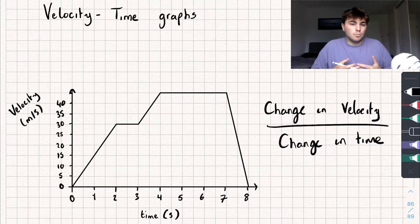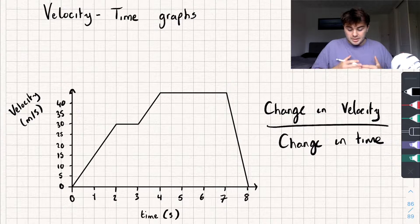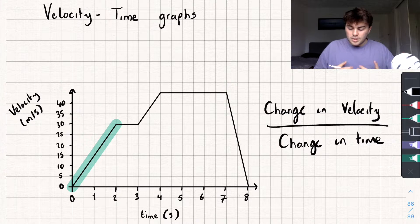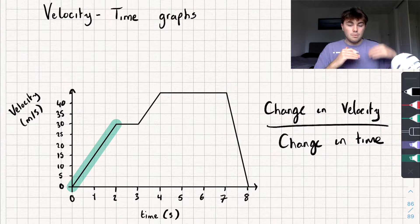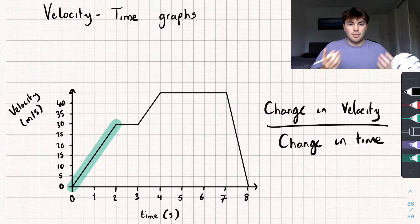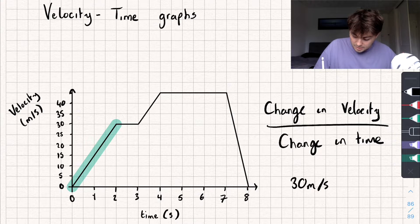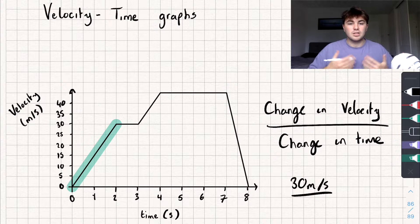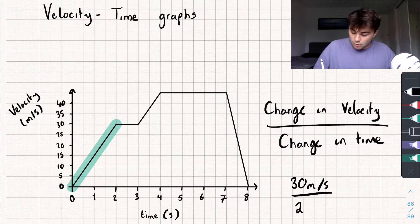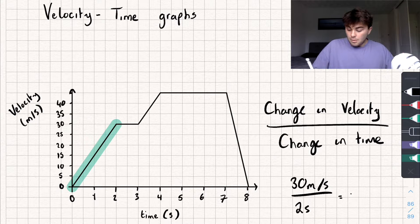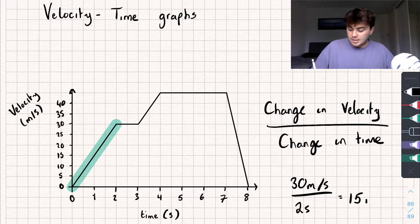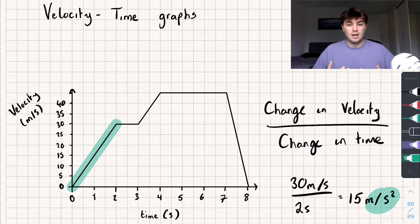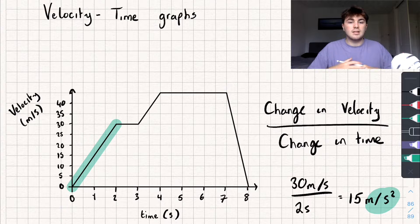So say a question would be, find the acceleration between 0 and 2 seconds. So we're interested in the gradient of this line here. So what is the change in velocity? Well, my velocity is from 0 to 30. So it changes by 30 metres per second. So that's going to be on the top, 30 metres per second. And I'm dividing that by the change in time. Well, 0 to 2 seconds, that's a change in time of 2 seconds. So let's write that on the bottom. And so when I divide them, I get 15. And the units for acceleration is going to be 15 metres per second squared.